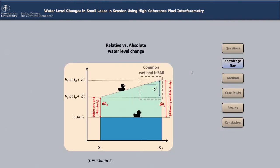Looking at this picture: what we measure in this study is the water level at point X0 — we measure delta H0 after the time period delta T. We can also measure the water level change at point X1 after the same time period delta T, which is delta H1. But the common InSAR methods that exist now measure only the difference between these two — meaning delta H1 minus delta H0 — which is a spatially relative change.